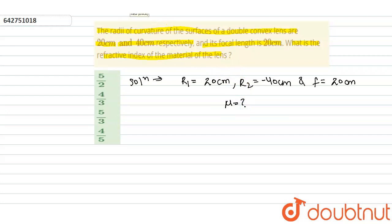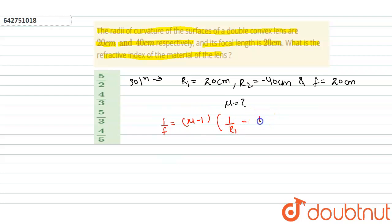We know the lensmaker's formula: 1/f = (μ − 1) × (1/R1 − 1/R2). Putting in the values: 1/20 = (μ − 1) × (1/20 − 1/(−40)).